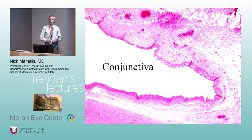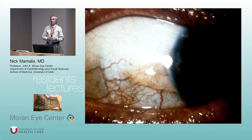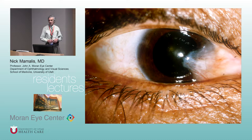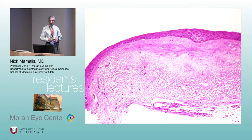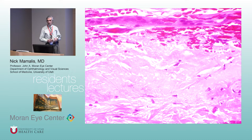Now conjunctiva. The epithelium is stratified squamous, non-keratinized, with goblet cells. Remember the basic parts: bulbar, forniceal, and palpebral conjunctiva. The most common entity we see is pinguacula, and if it crosses the limbus it becomes a pterygium. The classic path findings are basophilic degeneration and solar elastosis — that smudgy gray basophilic degeneration is ultraviolet light induced, and the little squiggly lines are solar elastosis.